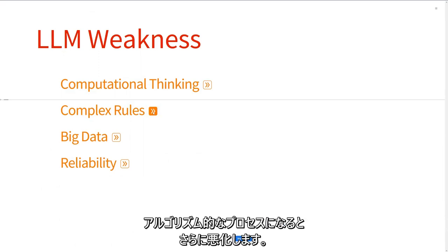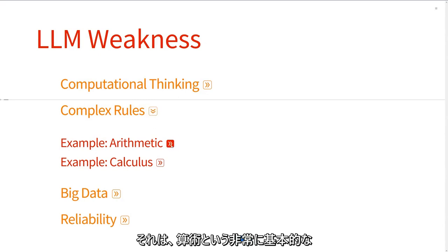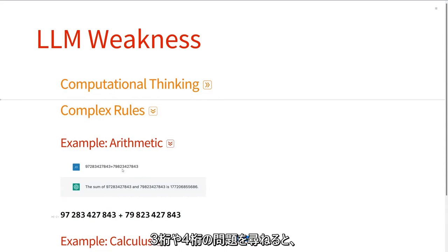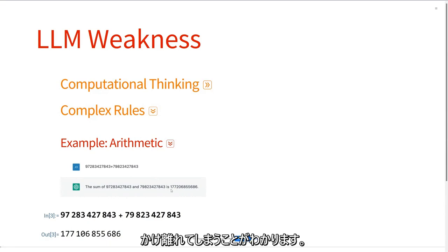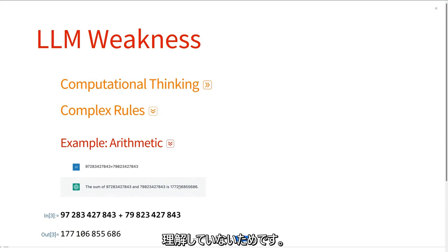That gets much worse when you get into algorithmic processes, where you want it to follow a sequence of steps in the way that programming algorithms in a programming language are very straightforward. That even goes as far as something completely basic, which is arithmetic. When things get slightly more complicated beyond things it's seen, and it actually has to start applying the rules, the answer it gives is different from the correct one. It's kind of pattern recognition that throws down all the right characters, but it's about 0.1% out because one digit is wrong. It doesn't actually fundamentally understand arithmetic — it's really using recall to see problems it's seen before.